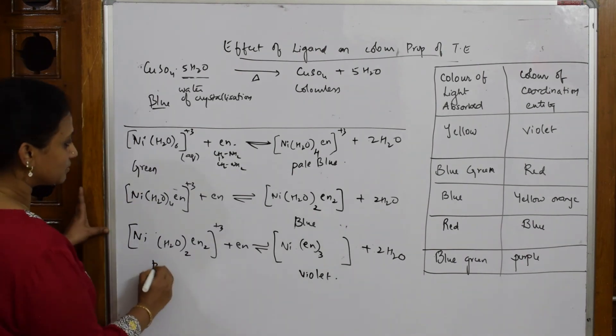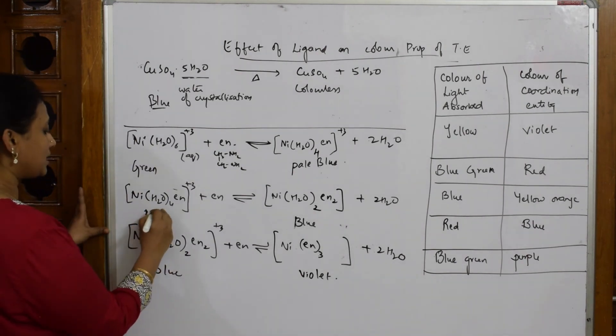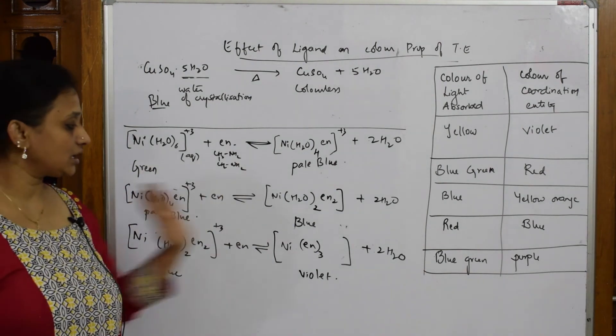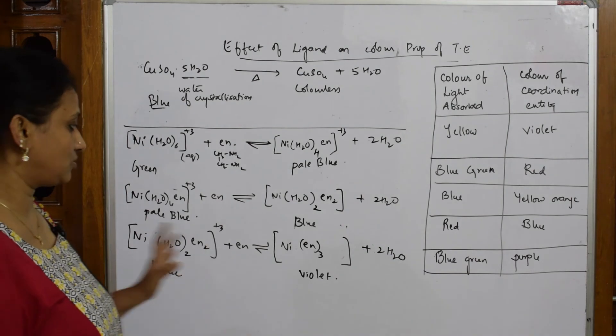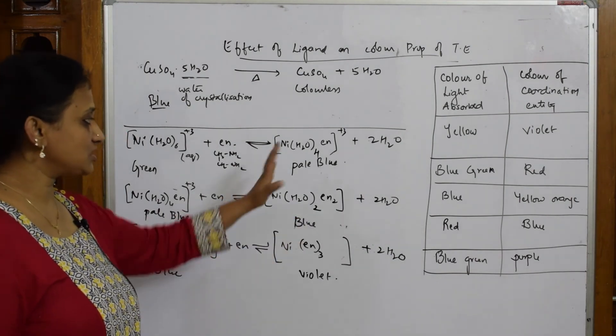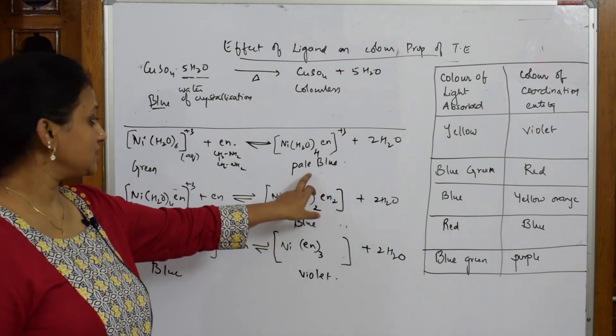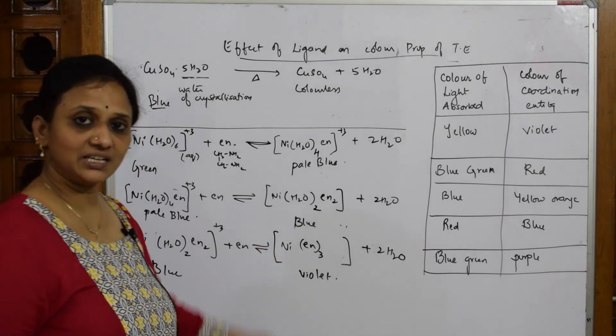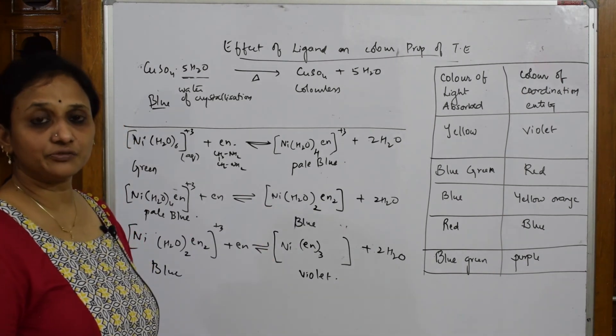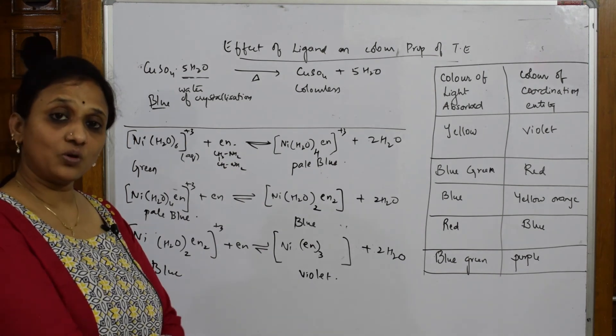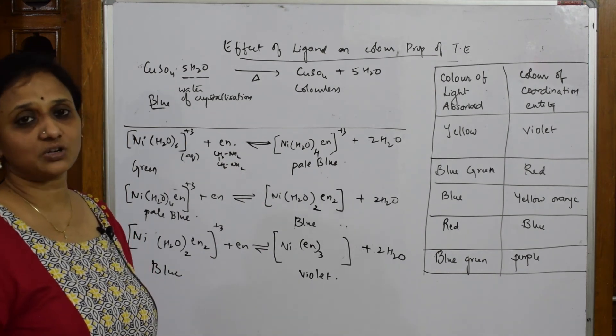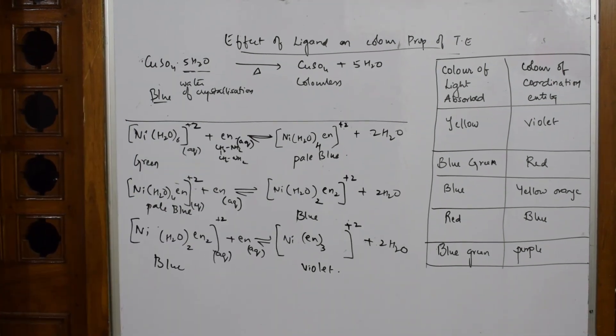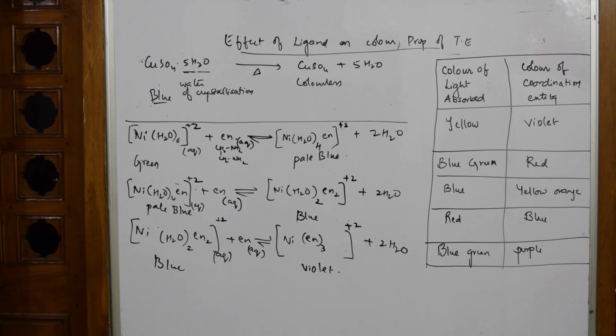Are you not finding the difference? This was green, this is pale blue, this is blue, this is violet. Whenever you're taking out ligand or taking out water from that, the change in the effect of that water of crystallization is prominently seen in its color. When we see the wavelength of this in the spectrum, you can clearly see what is the intensity or importance of the water molecule in this complex ion.